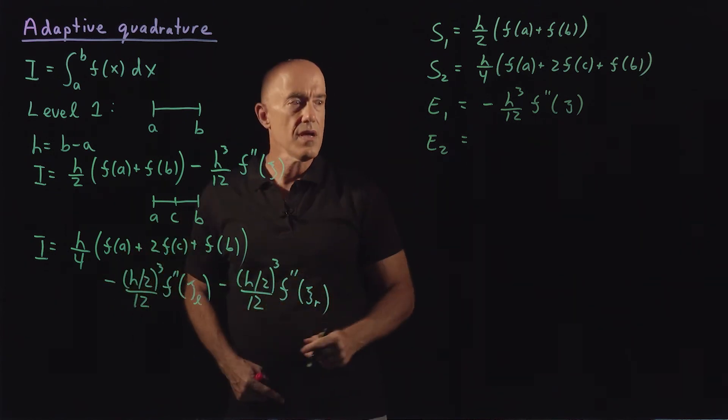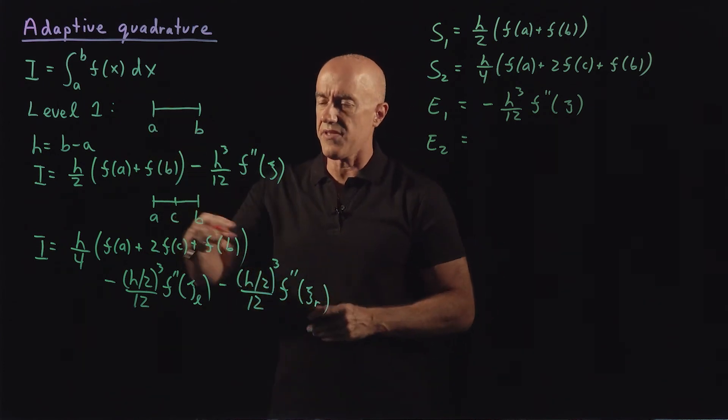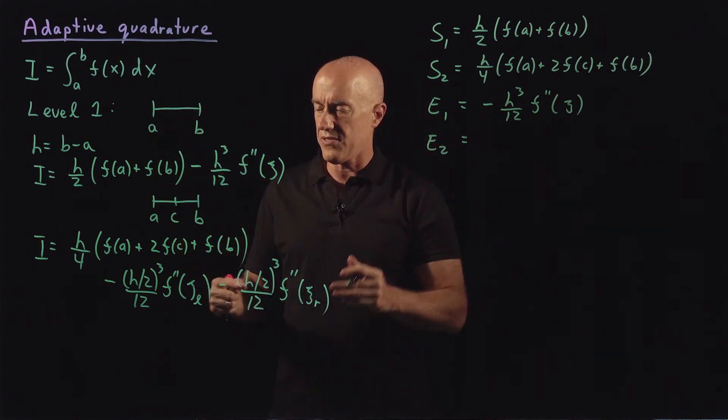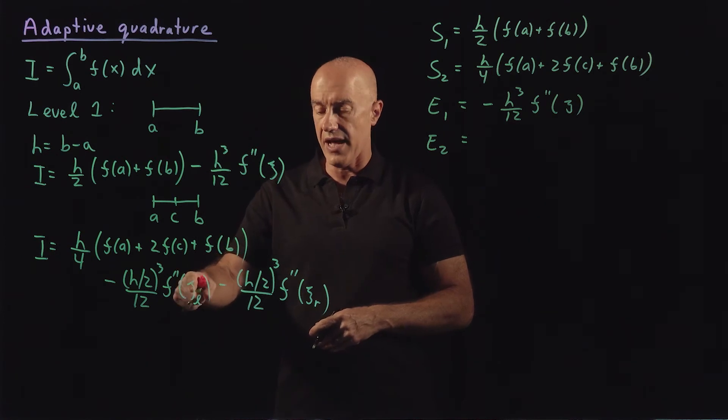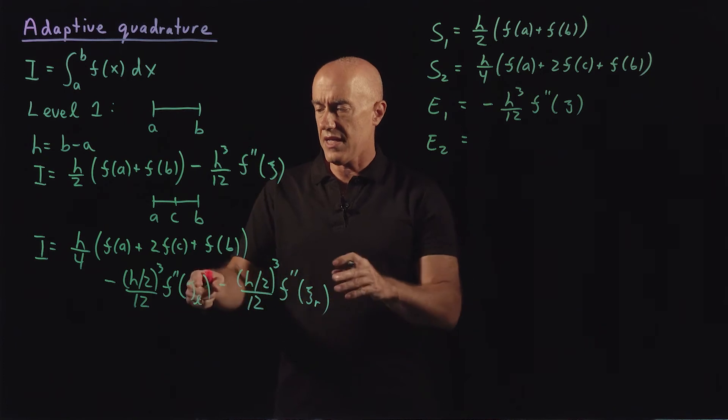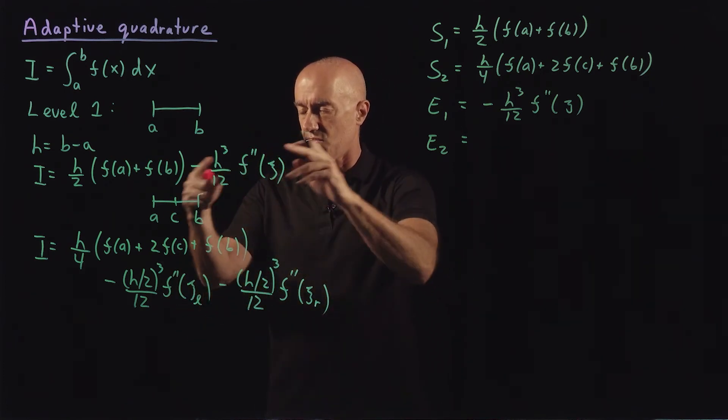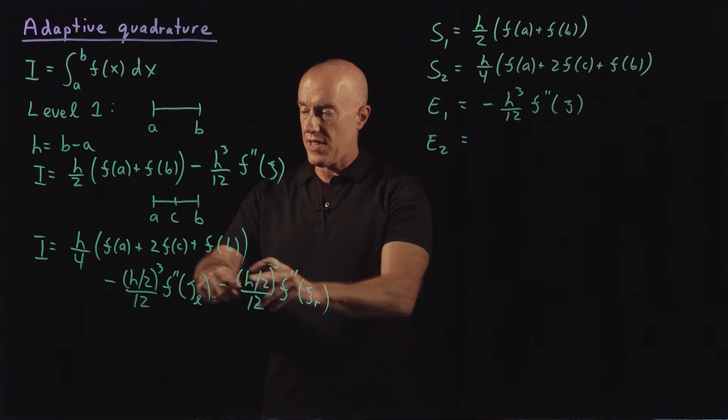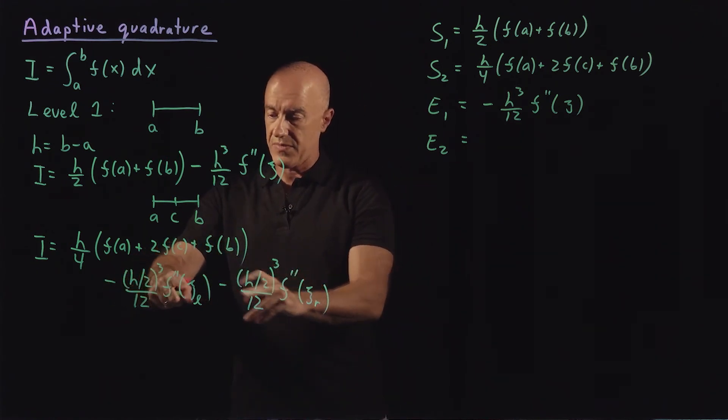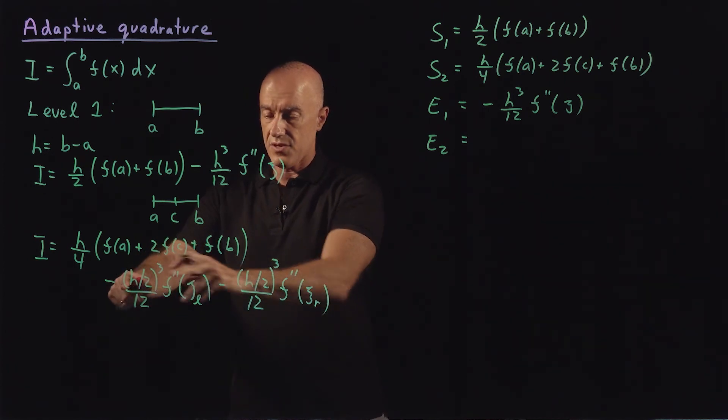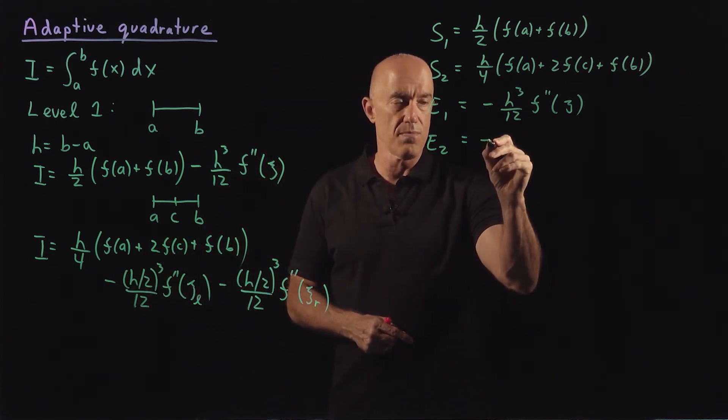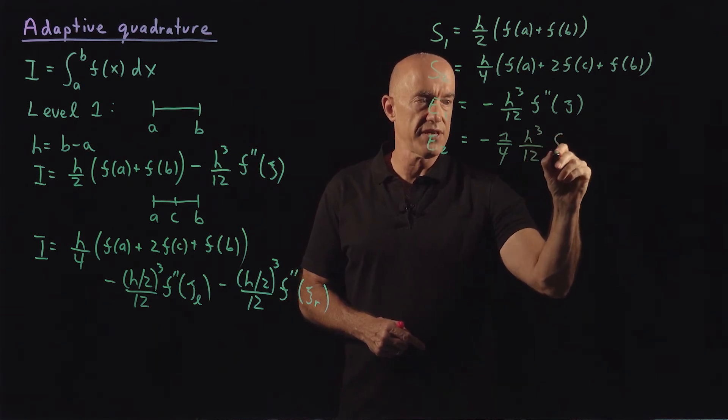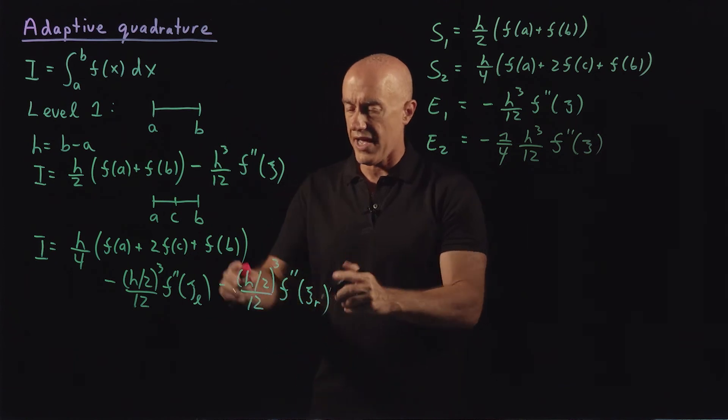The error in this second integral is this one, but we're going to make an approximation. Here the approximation is not great, but the approximation will get better and better as we move down the levels. Instead of taking ξ left and ξ right, let's just say that these are kind of all equal. So the second derivative functions, we'll just say they're all equal. So then the error here would be two of these, we divide through by 8, so then we have minus one quarter of h cubed over 12 and then just approximate this by f double prime of ξ.